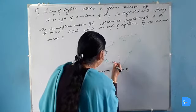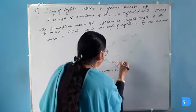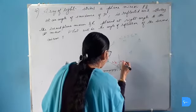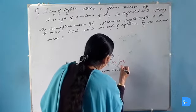So this will be 30 degrees. We have to find angle of reflection in second case. This is angle I2 and this will be angle R2. We have to find this.